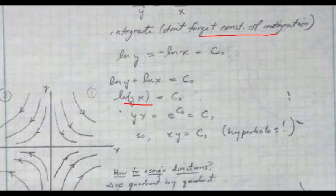We go through some logarithmic rules, like so, and we end up with an expression that says x times y is equal to another constant. So these constants are arbitrary, and they give us a family of curves.